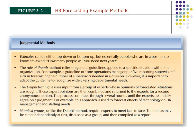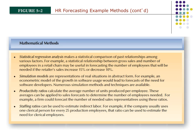Judgmental forecasting techniques include estimates, rules of thumb, the Delphi technique — a brainstorming process — and nominal group technique, another organized brainstorming approach. These allow us to gather data and make more qualitative decisions. Mathematical models include productivity ratios, staffing ratios, simulation models, and regression analysis. Since many of you have had MS-250 and MS-251, you understand some of those statistical model basics and how to predict things.